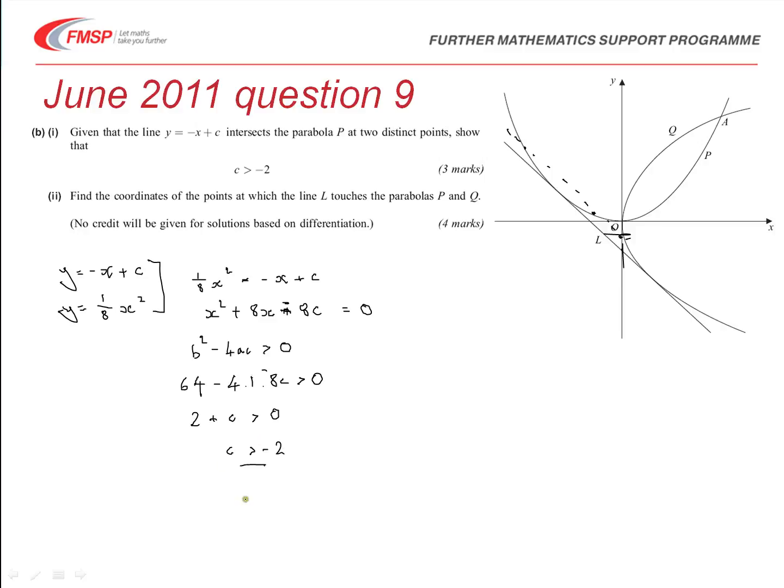Okay, there were three marks for that part, so... Setting off by solving a pair of simultaneous equations to give us the quadratic. There's a method mark there. For using the fact that b squared minus four ac, the discriminant's got to be greater than nought. That will give you a mark for stating that somewhere. And then for obtaining correctly the fact that c is greater than negative two. We'll give you a third mark.